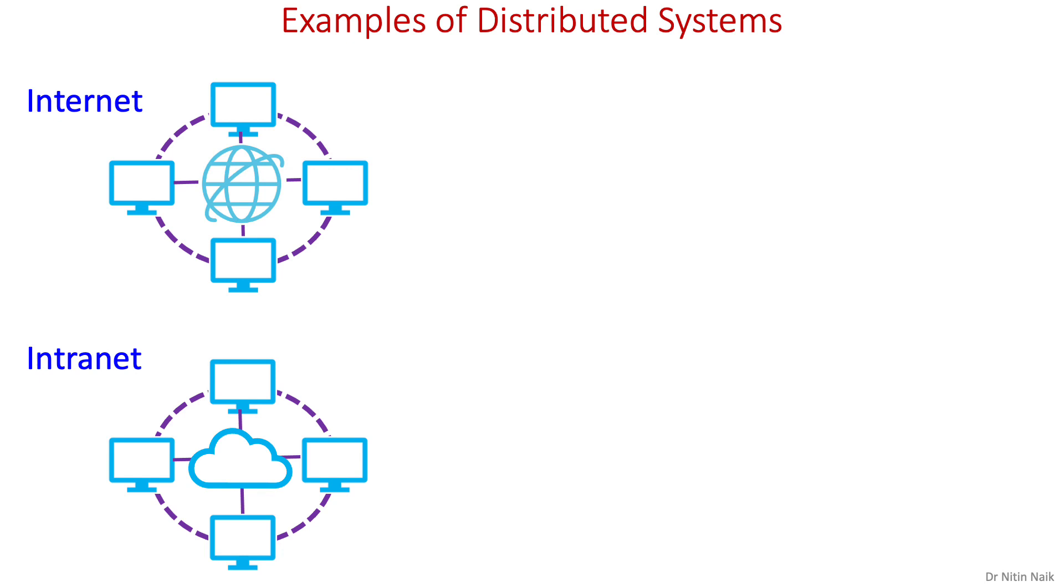Let's look at some examples of distributed systems. The most popular example of a distributed system is the internet, the world's largest distributed system. Virtually all web applications are built on a distributed computing system. Another example is an intranet. It is a private network used by organizations to distribute computing resources, services and communications to their workforce.